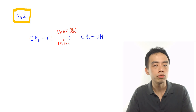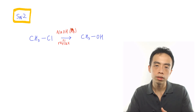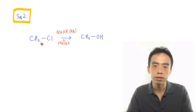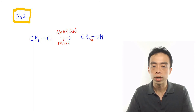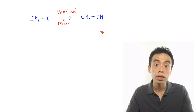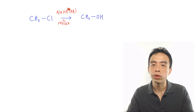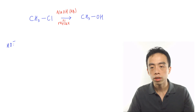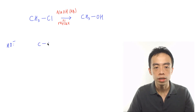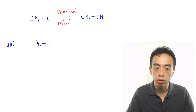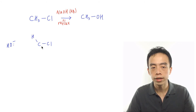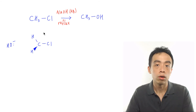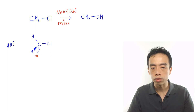The second pathway of nucleophilic substitution is SN2 mechanism. SN2 mechanism, compared to SN1, is a one-step process. Using this example: a primary chloroalkane. I can convert the chloroalkane to an alcohol using NaOH aqueous, heat or reflux. Because SN2 is a one-step reaction, the OH⁻ will be involved in this step.